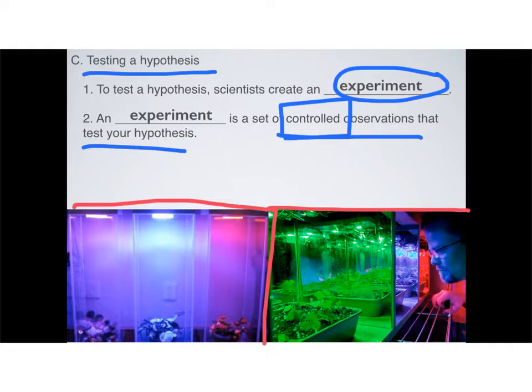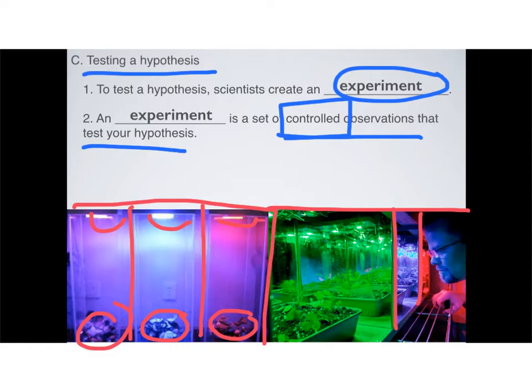How would you create an experiment? You would need to control as many variables as you can. You would need the same type of plant in the bottom, different colored lights at the top. You would need to make sure that you are watering them the same amount, getting them the same amount of light even though they're different colored lights, that they are not interacting with each other, that you have the same environment. That's what an experiment is. It's a set of controlled observations that you make to test a hypothesis.